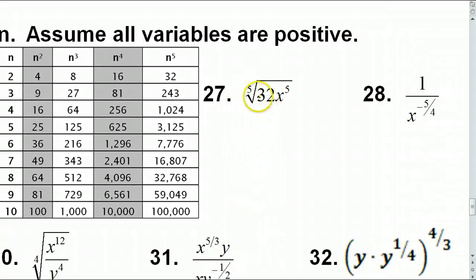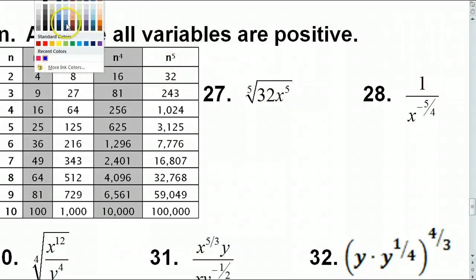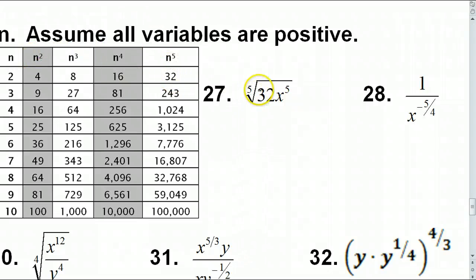Number 27: notice that this is in radical form, so if it doesn't come out evenly we would leave our answer in radical form. This will come out evenly though — looking at the fifth root, 32 is on the list of fifth powers, so that can be simplified and brought out.